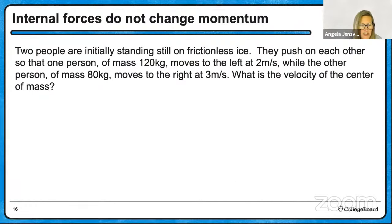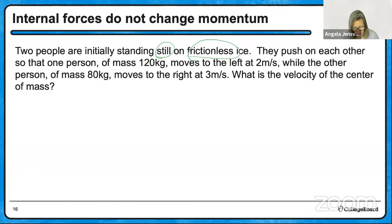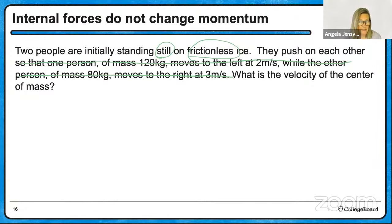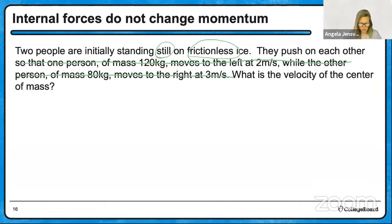Two people initially standing still on frictionless ice push on each other. What is the velocity of the center of mass? We don't need any other details. Since it's frictionless, the sum of forces is zero, so the center of mass velocity doesn't change. Since they were initially standing still, the velocity of the center of mass remains zero after this explosion.